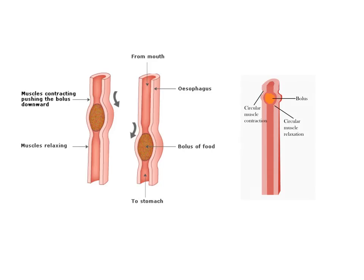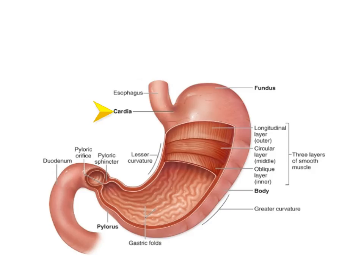The bolus of food is then swallowed and passes through the esophagus, past the cardiac sphincter, into the stomach where gastric juices are added and the bolus is churned by peristalsis. The bolus is now referred to as acidic chyme, which is secreted into the small intestine through the pyloric sphincter.